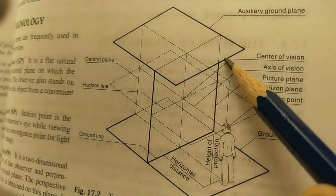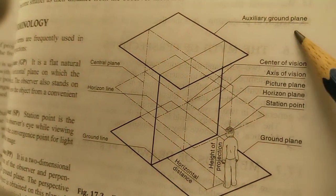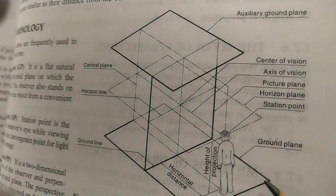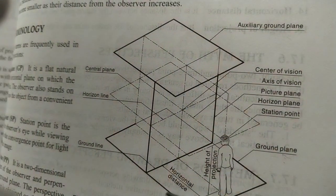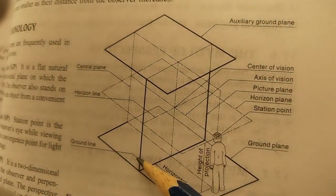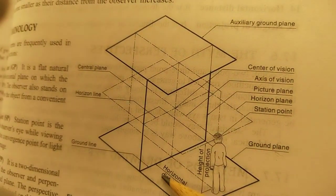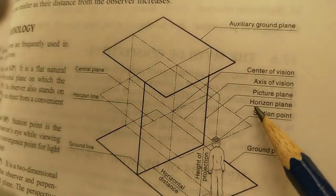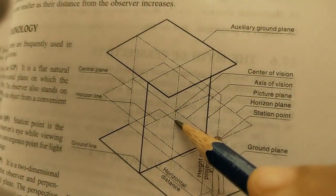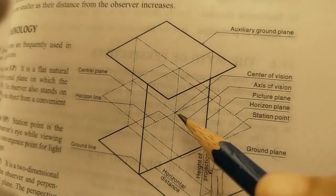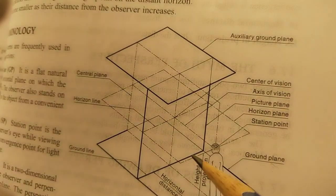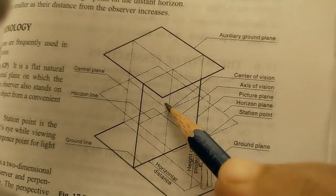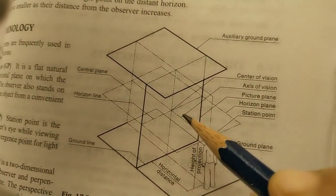After these two horizontal planes, there is one more called the auxiliary ground plane, which is parallel to the ground plane. So these three are the horizontal planes. There is also a vertical plane perpendicular to the ground at 90 degrees — this plane is called the picture plane. Whatever the observer sees is projected onto this plane, and it is perpendicular to the horizontal plane.